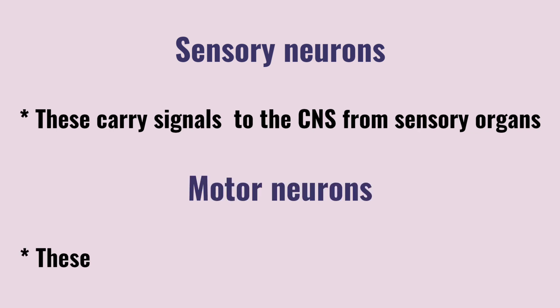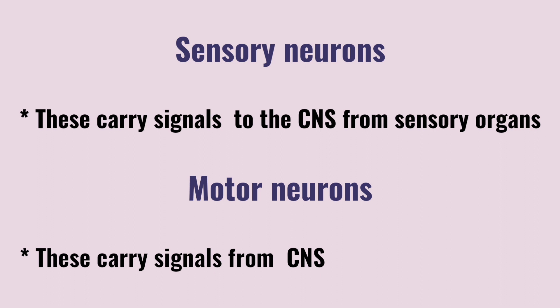Motor neurons carry signals from the CNS to control muscles and glands. You have sensory neurons connecting sensory organs to the CNS, and motor neurons connecting the CNS to other body parts such as muscles and glands. That is the role of motor neurons.